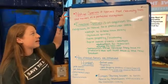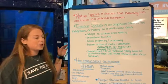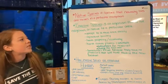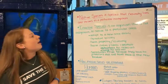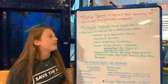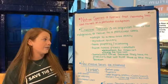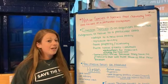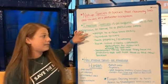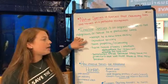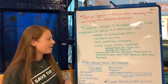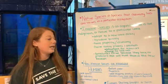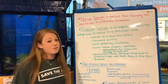The first thing I want to talk about is the difference between a native species and an invasive species. A native species is a species that naturally lives and thrives in a particular ecosystem, whereas an invasive species is an organism that is not indigenous or native to a particular area. Invasive species adapt to their new area easily, reproduce quickly, can harm property and the economy, and can harm native plants and animals by outcompeting them for resources.